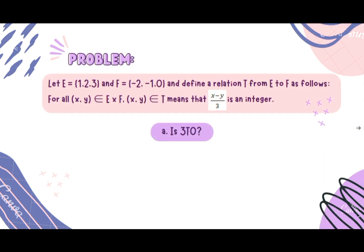Here we have a problem. Let E equal the set {1, 2, 3} and F equal the set {-2, -1, 0}, and define a relation T from E to F as follows.